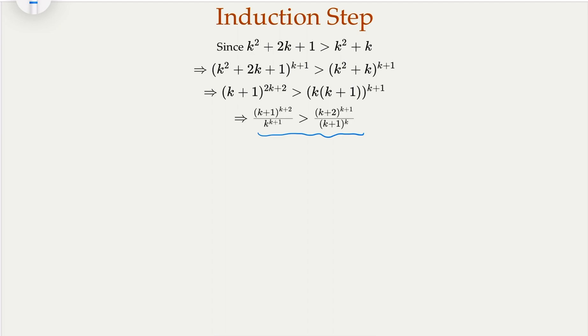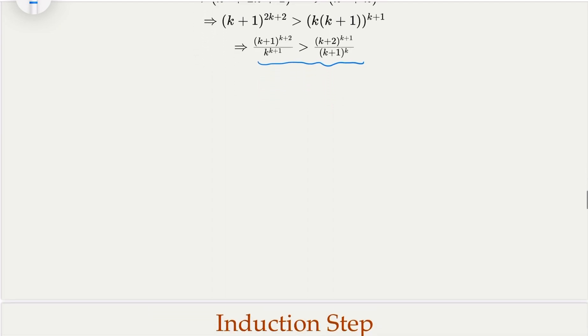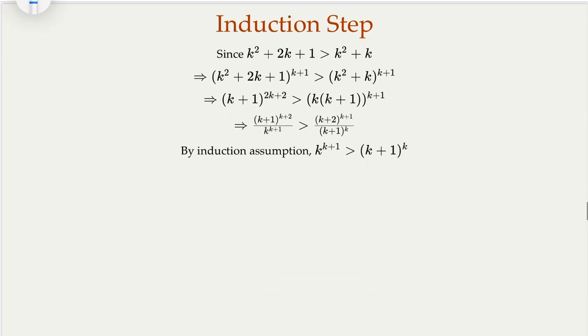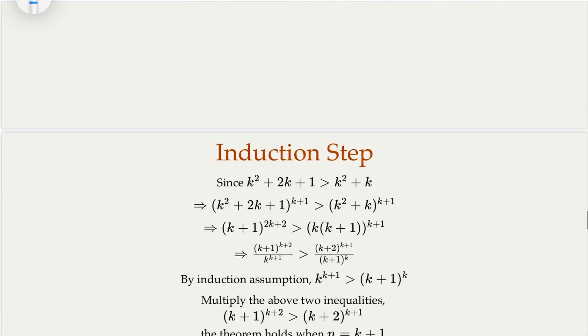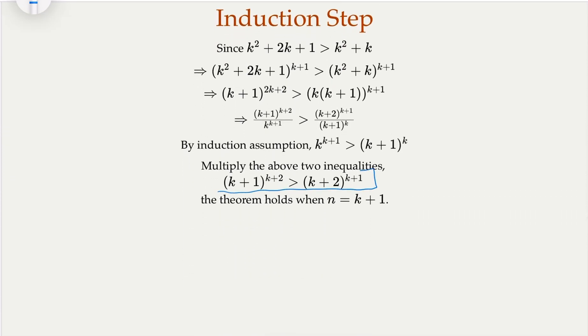Now remember, we also have the induction assumption. The assumption is that this is true. So I have equation number 1, I have equation number 2. I multiply them together. And then some terms will cancel here. And then you have this one. This exactly means the theorem holds when n equals k plus 1. This completes the induction steps because base is checked and the induction step is done.